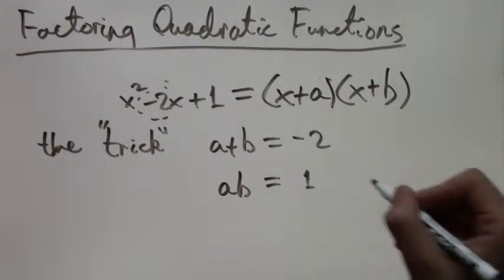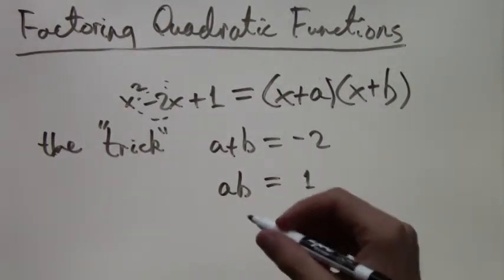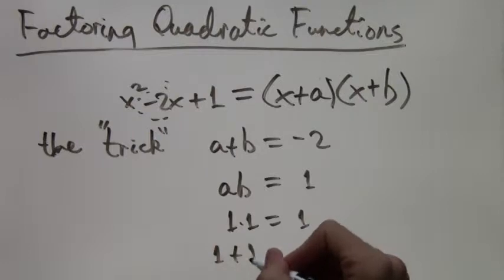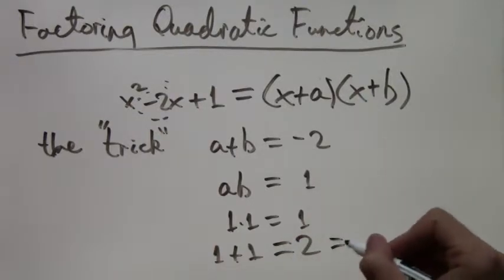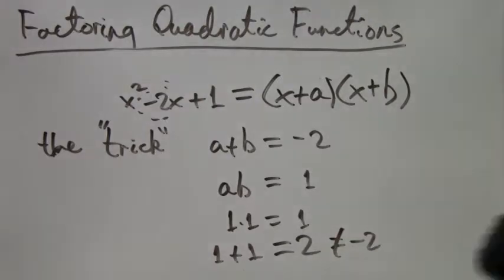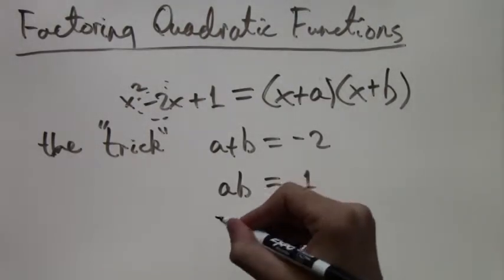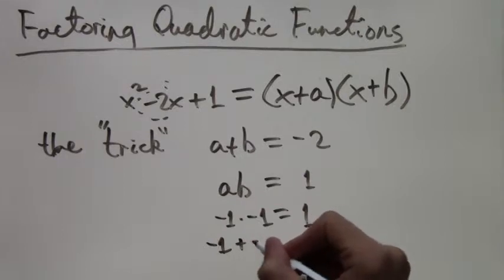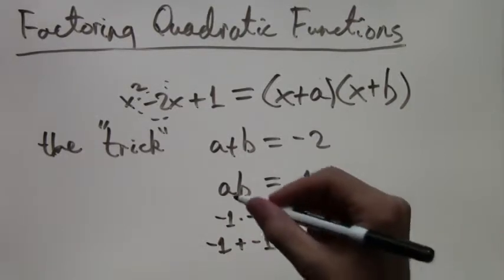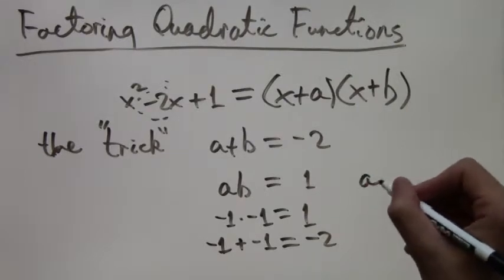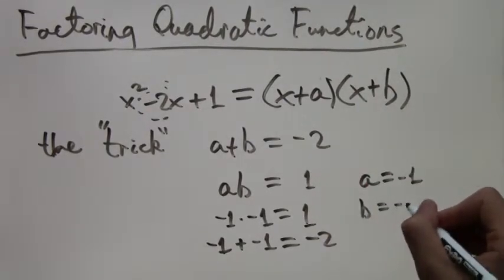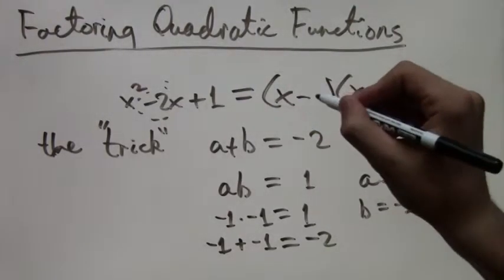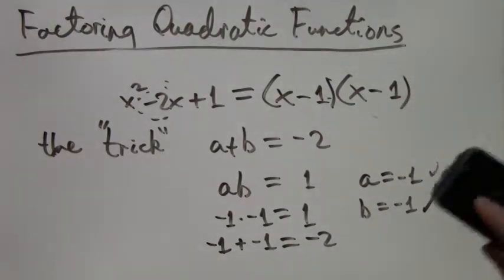The trick is that a plus b equals negative 2 in this case, and a times b equals positive 1. So you just look at the equation: you have negative 2x, so the sum is negative 2, and you have plus 1 at the end, so the product a times b equals 1. So we check what times what equals 1. 1 times 1 equals 1, but 1 plus 1 equals 2, and that's wrong. Or we can have negative 1 times negative 1 equals 1, and negative 1 plus negative 1 is negative 2, which is right. So a equals negative 1 and b equals negative 1. We just plug it in now and we get x minus 1 times x minus 1. There we factored it.